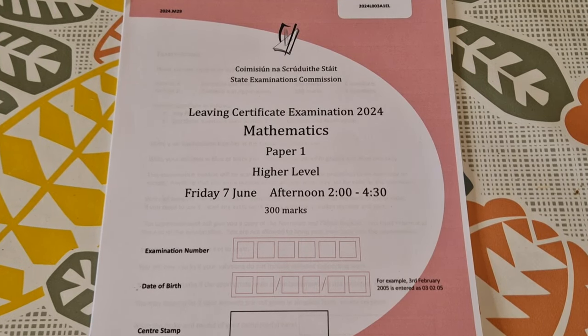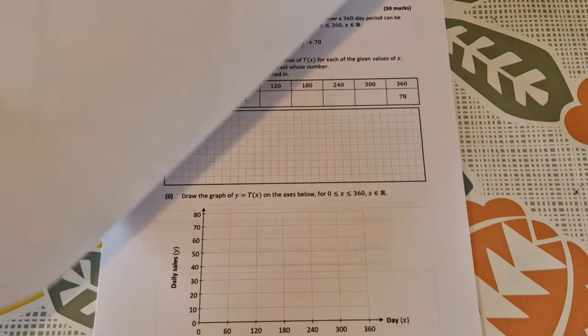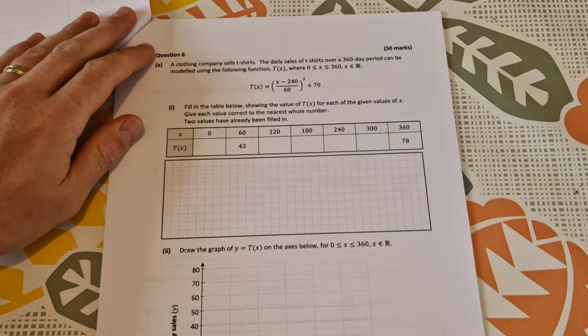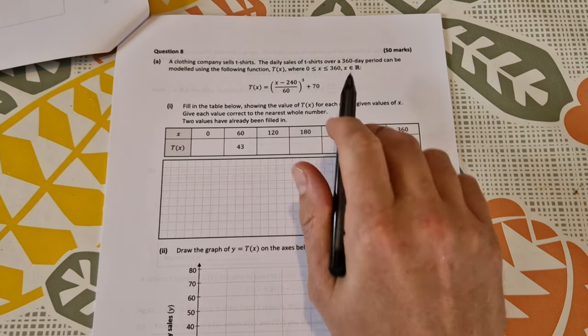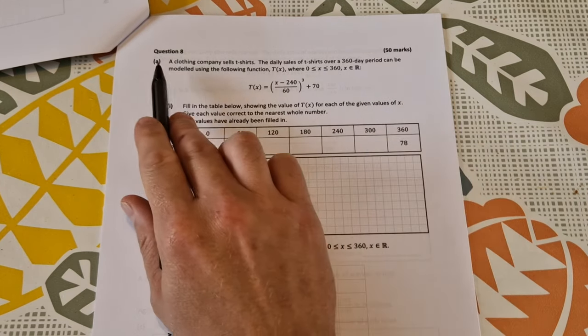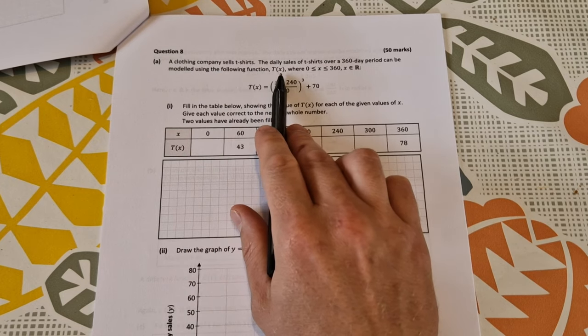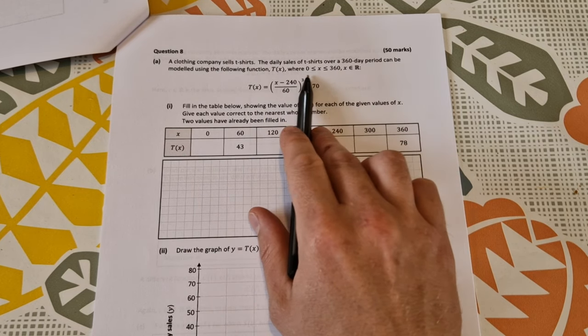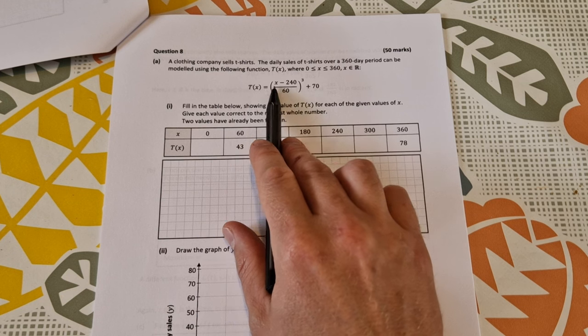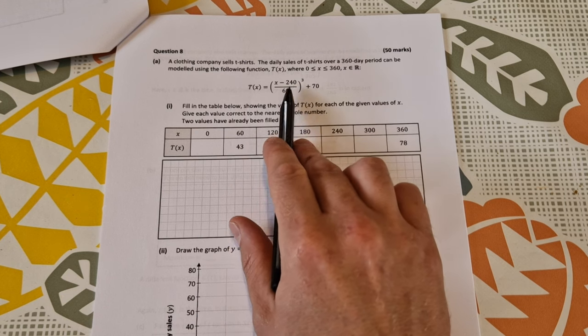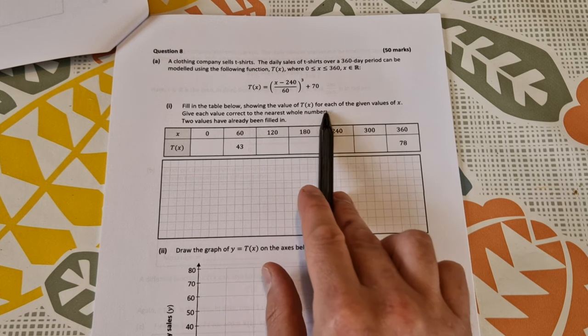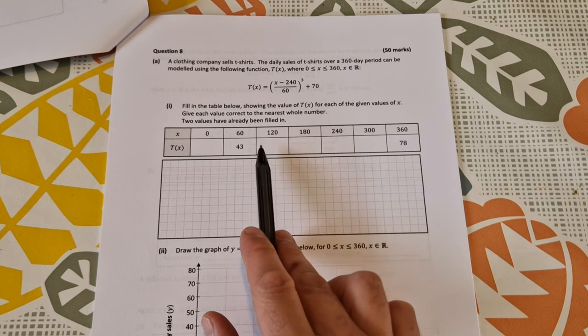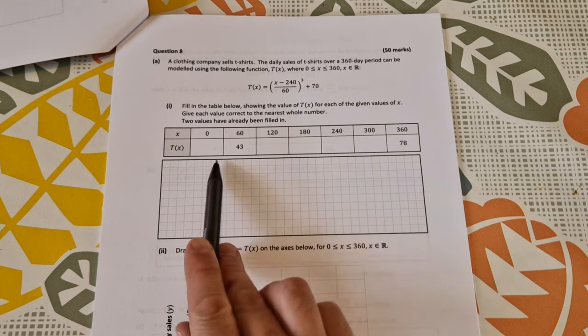Liam insert higher level maths 2024, this is the solution video to paper 1 question 8. In question 8, we're told that a clothing company sells t-shirts. The daily sales of t-shirts over a 360 day period can be modeled using the following function t(x), where x is between 0 and 360, and t(x) equals (x minus 240 over 60) to the power of 3 plus 70. Fill in the table below showing the value of t(x) for each given value of x.